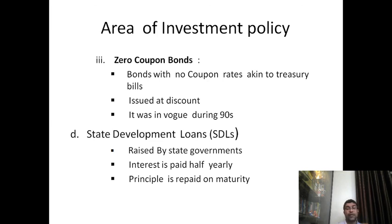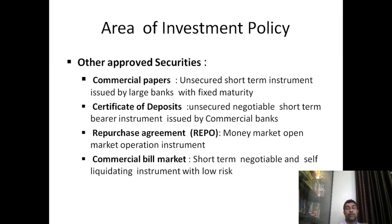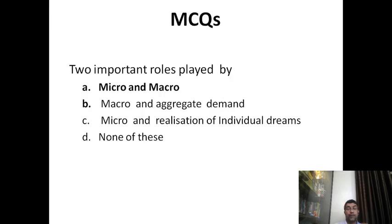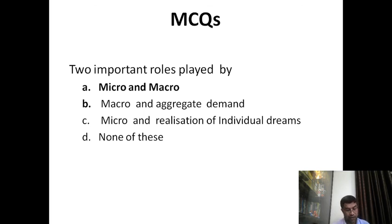State development loans are raised by state governments, with interest paid half-yearly and principal paid on maturity. Other areas of investment policy include other approved securities: commercial papers, which are unsecured short-term instruments issued by large banks with fixed maturity; certificate of deposit, an unsecured negotiable short-term bearer instrument issued by commercial banks; repurchase agreements (Repo or Reverse Repo), a money market open market operations instrument used by bankers; and commercial bill market, which involves short-term negotiable and self-liquidating instruments with low risk. This is all about investment policies and investment decisions. Thank you.